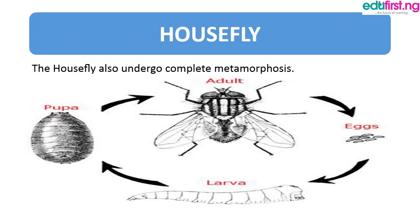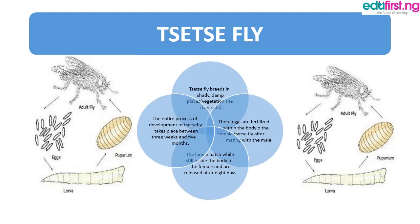Moving on to the house fly — the house fly also undergoes complete metamorphosis. The adult female lays eggs on decaying organic matter. The eggs hatch into larvae, also called maggots, within one day. These feed on decaying matter for between three and six days and then develop into pupa. The pupa stage lasts up to five days and releases the adult house fly, or imago. There is a diagram illustrating this.